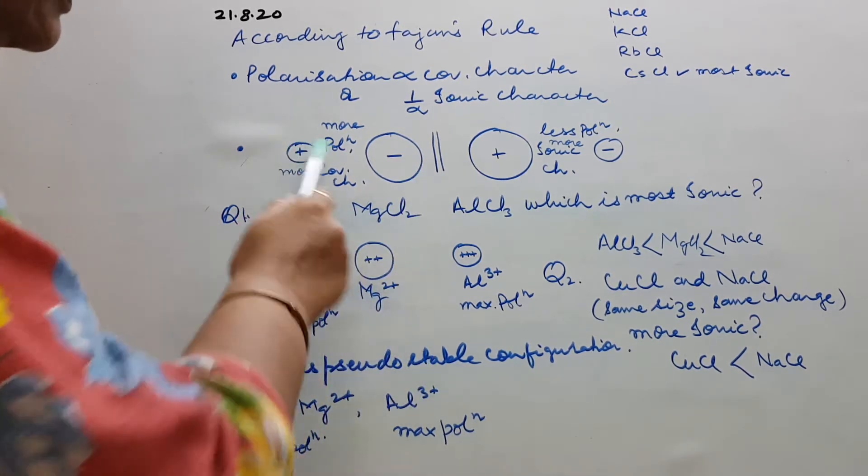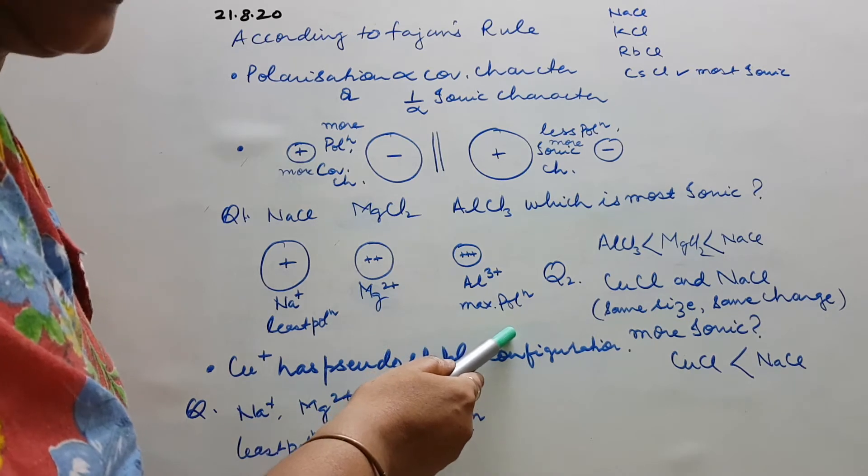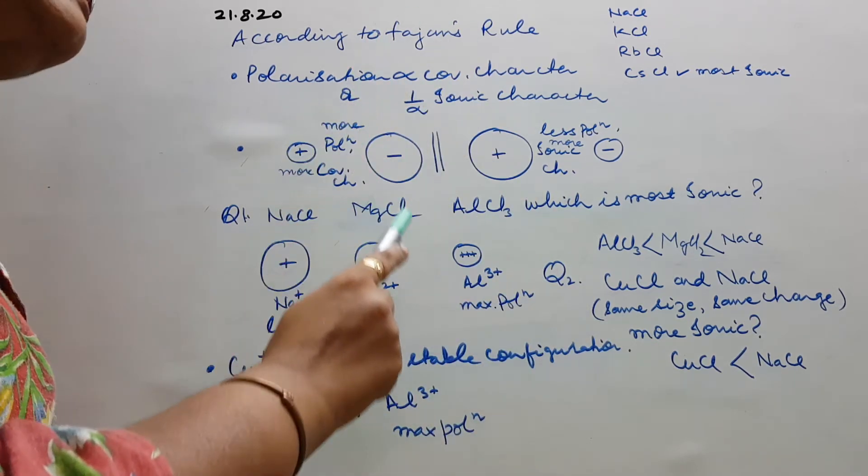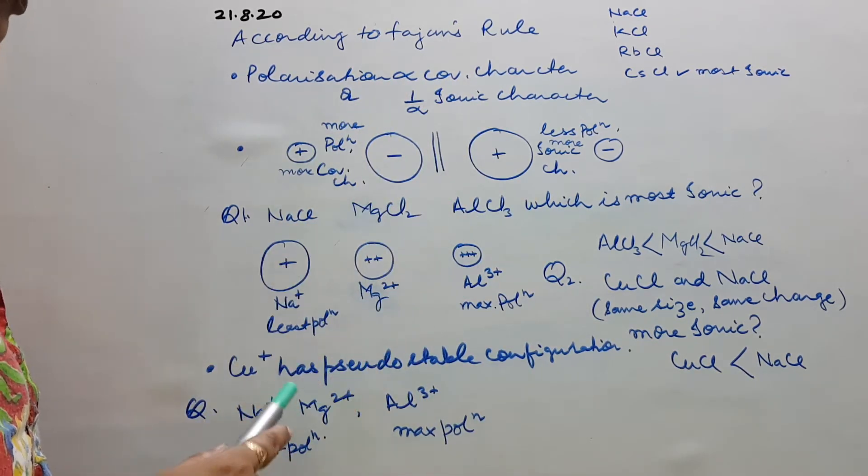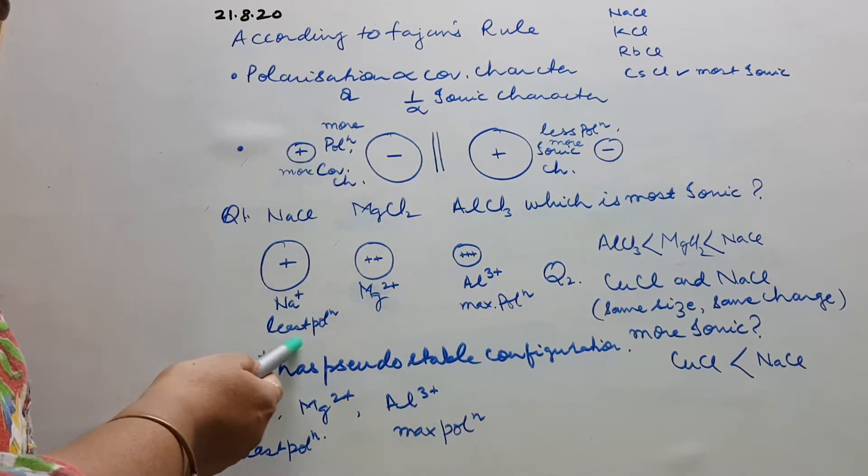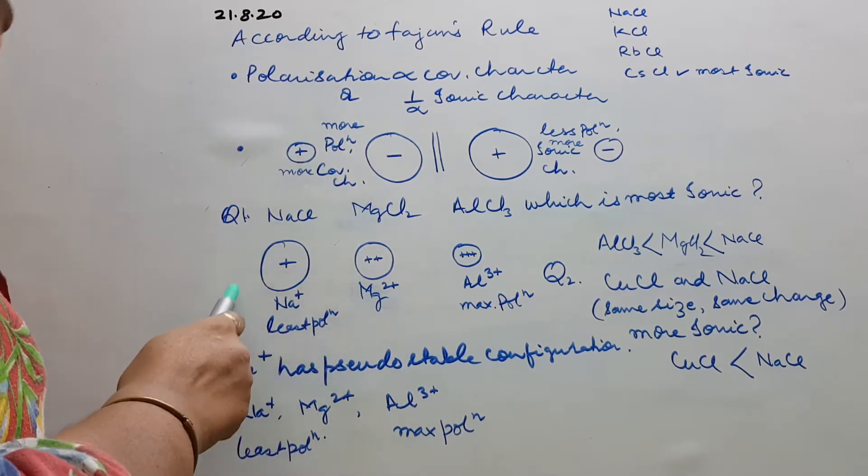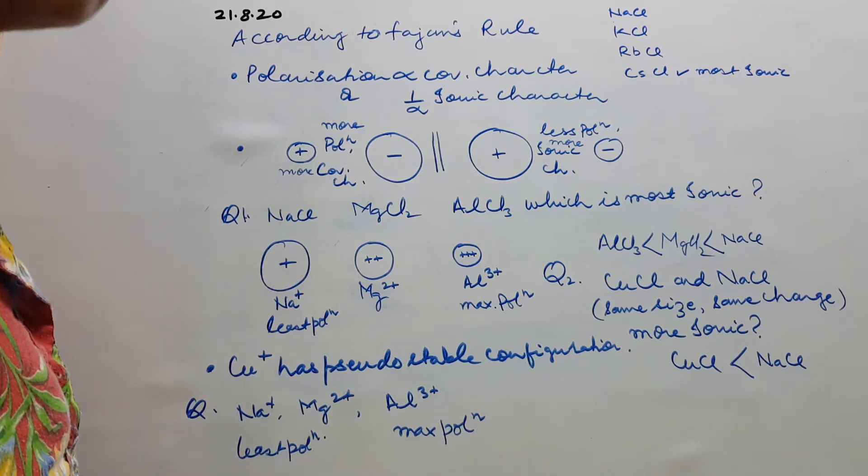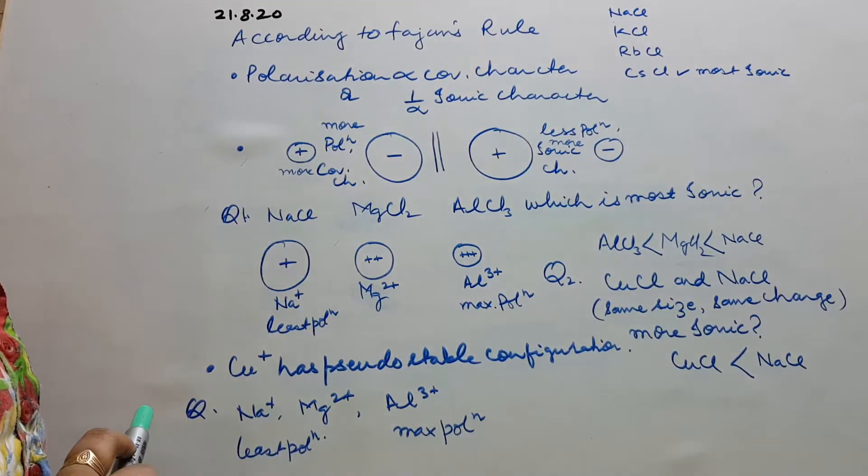So smaller cation, maximum polarization, means will have maximum covalent character. And so opposite, it will have the least polarization and we have the maximum ionic character according to Fajan's rule.